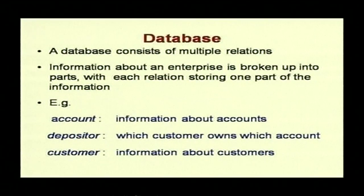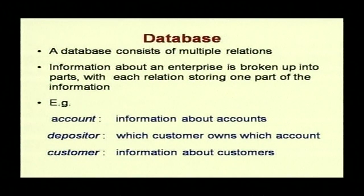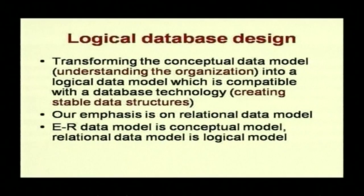A database consists of multiple tables or relations. Information about an enterprise is broken up into different parts and each relation stores one part of the information. For example, a bank database consists of three relations: account, depositor, and customer. Account stores information about accounts; depositor stores which customer owns which account; and customer stores information about customers. Transforming the conceptual data model into a logical data model compatible with database technology is called logical database design.